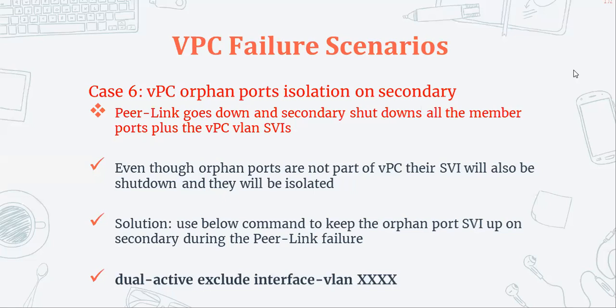In this section we will discuss our next failure scenario. The impact is that your VPC orphan ports will get isolated on the secondary device. When your VPC peer link goes down and the secondary device shuts down all the member ports plus the VPC VLAN SVIs, orphan ports will be isolated because orphan ports are not part of VPC — they are connected only on one VPC peer — and still they will be impacted when the peer link goes down, because this is the default behavior.